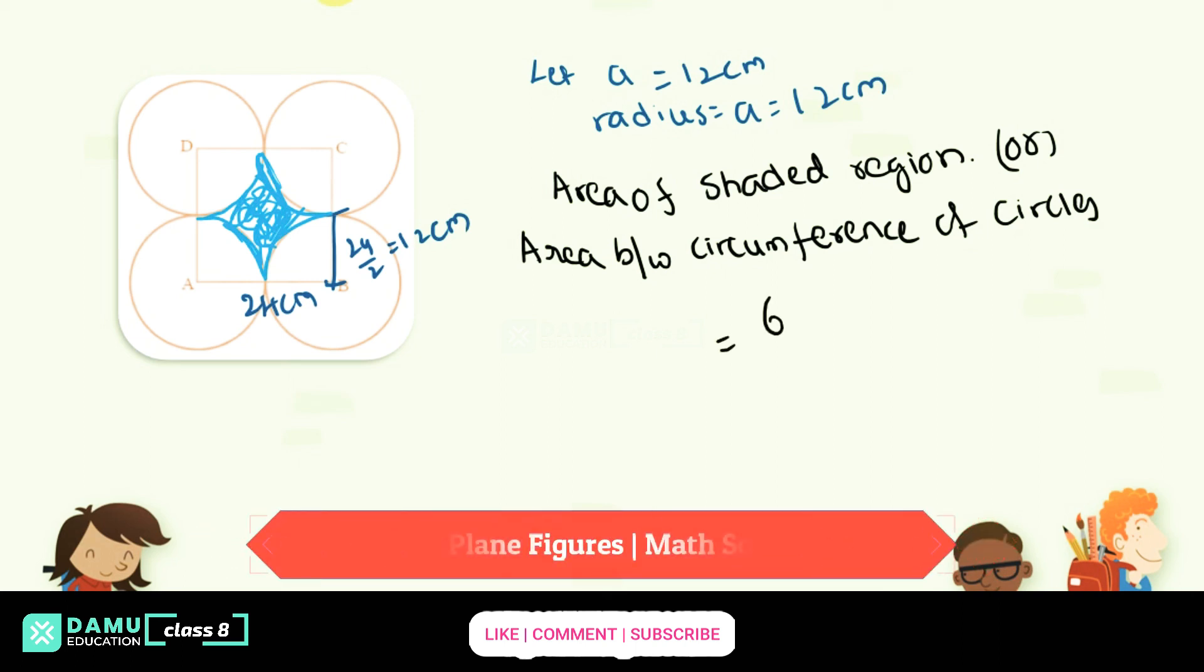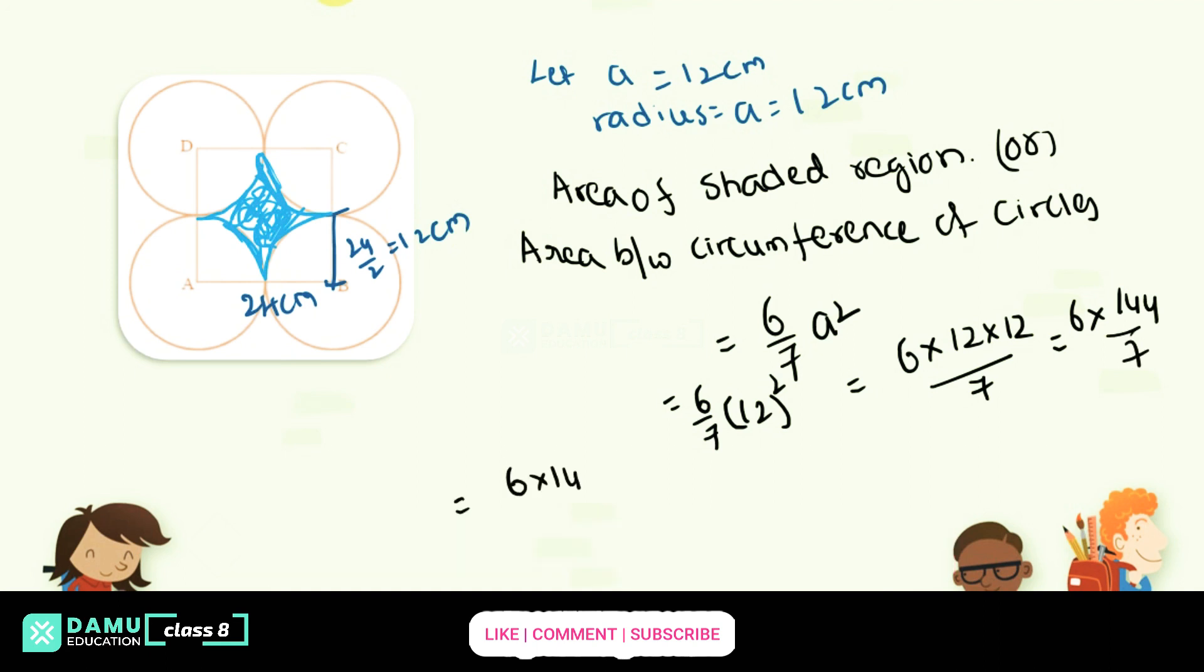That will be equal to 6 by 7 A square. So 6 by 7 means 6 by 7 into A is what, so 12 square. So let's take 6 into 12 into 12 divided by 7. So what we'll get here is 6 into 144 by 7. So let's take 6 into 144 by 7.